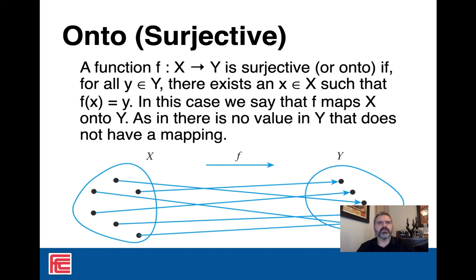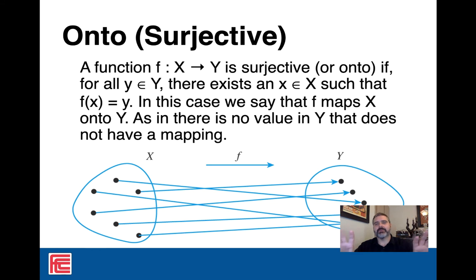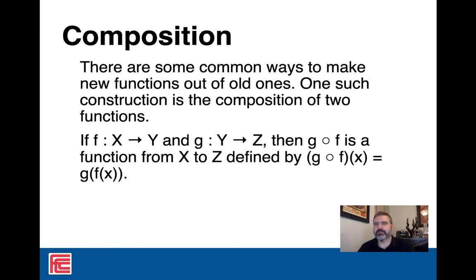There's also bijective, which the book doesn't explicitly mention, but means one-to-one correspondence — you are both onto and one-to-one. Every element of X points to exactly a unique element of Y, and every element of Y is pointed to. There's a unique relationship between every value of X and every value of Y. We call that a one-to-one correspondence, or a bijective function.